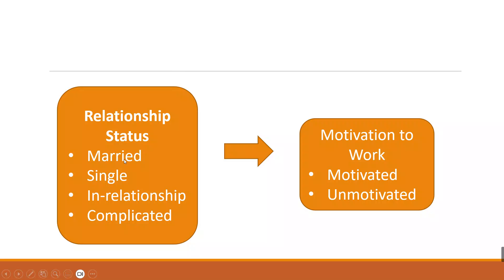The variable relationship status contains categorical variables: married, single, in relationship, and complicated. The dependent variable, motivation to work, is simply motivated or unmotivated.